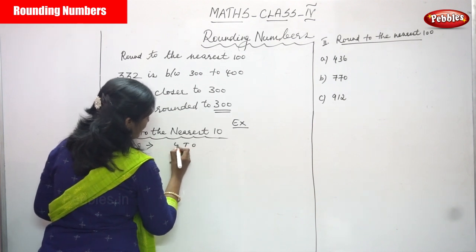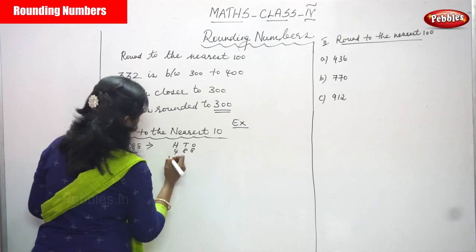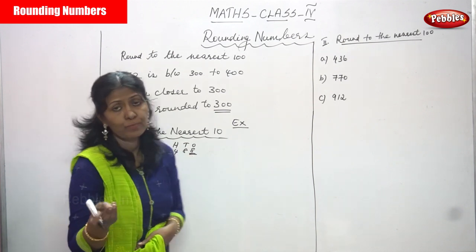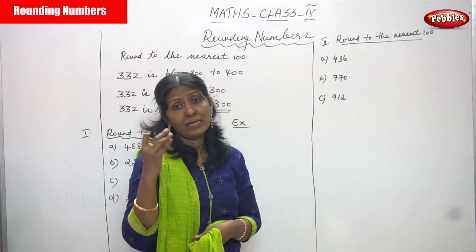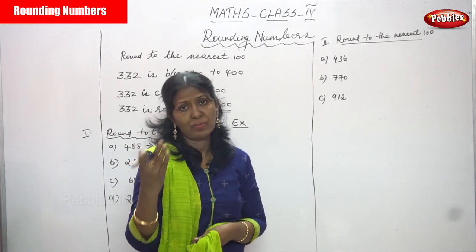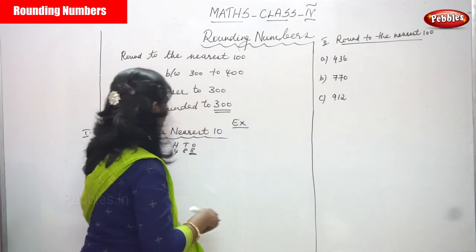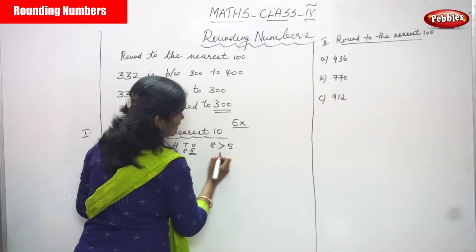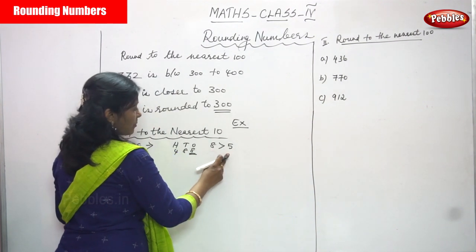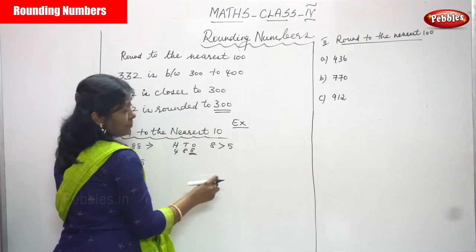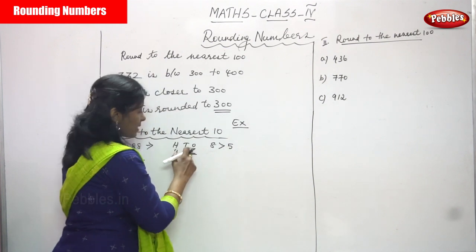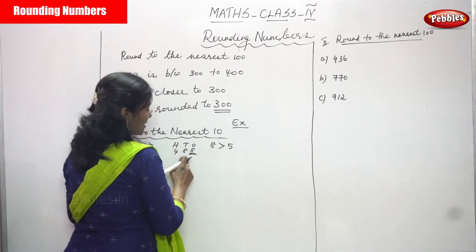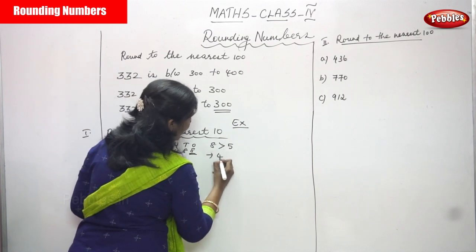For 488, we have 1's, 10's, and 100's places: 8, 8, and 4. Look at the 1's place — the number is 8. This is greater than 5. When a digit is greater than 5, you have to consider the next larger number. So, 8 is greater than 5, meaning you take the next large number. The 1's place becomes 0, and you can consider the 10's digit as 8 becoming 9. The answer is 490.